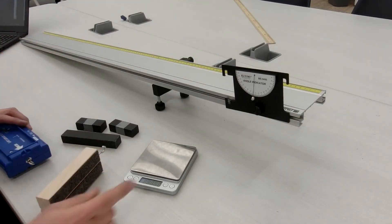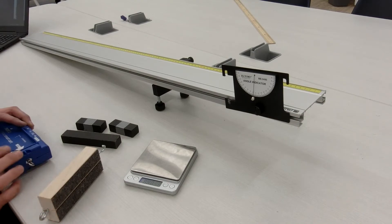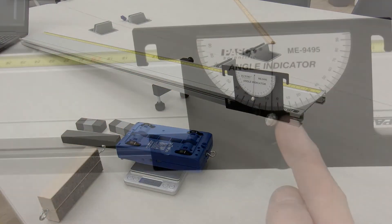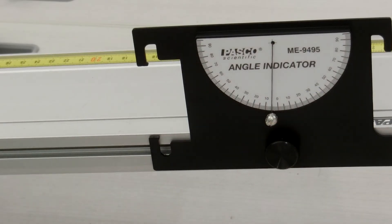Measure the mass of all the items you'll be using. This indicator shows you the angle of incline of the track.